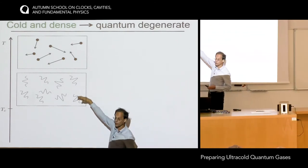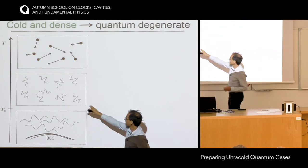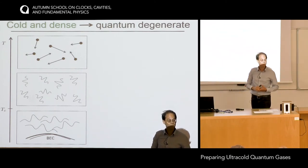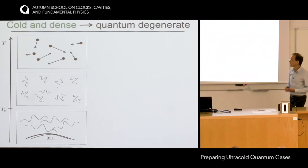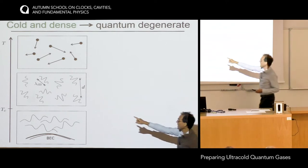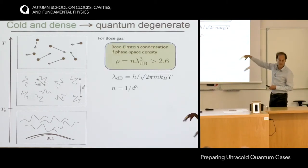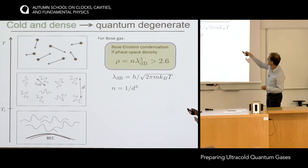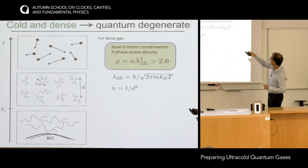The size of this wave function — the de Broglie wavelength — depends on the velocity of the atoms. The slower they are, the bigger it gets. If you cool even more, these wavelengths describing individual atoms will start to overlap. If we are working with identical bosons, these wavelengths will synchronize with each other and form a Bose-Einstein condensate — a macroscopically occupied matter wave. Bose-Einstein condensation happens when the phase-space density exceeds 2.6 for a homogeneous gas, where phase-space density is defined as the density times the de Broglie wavelength cubed.